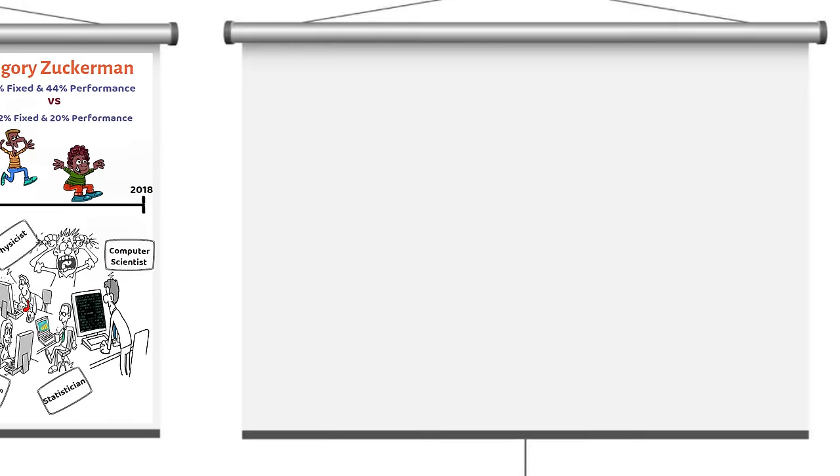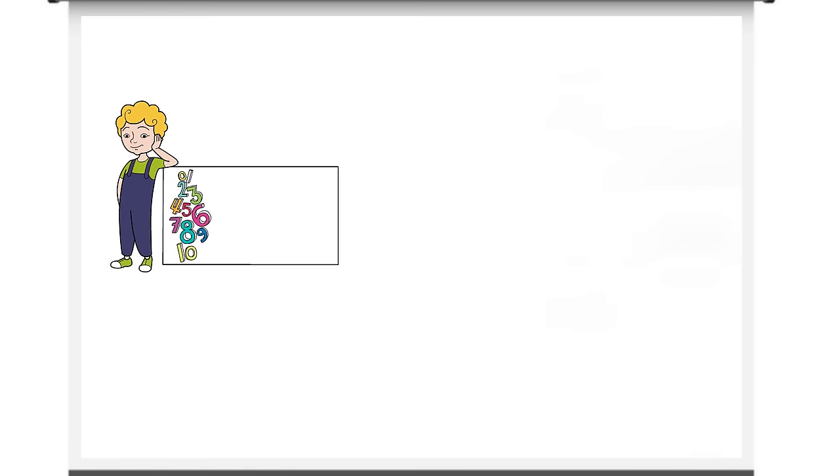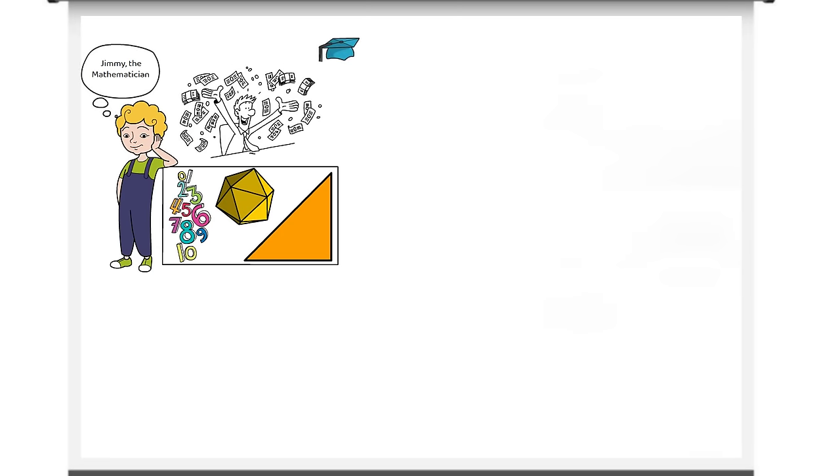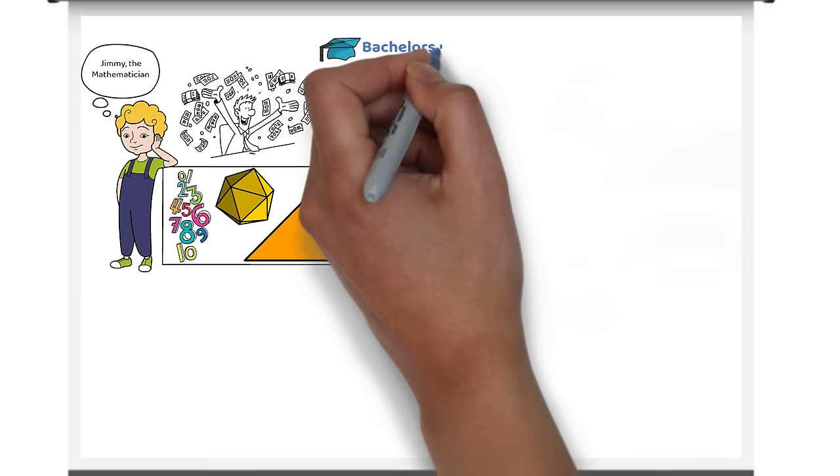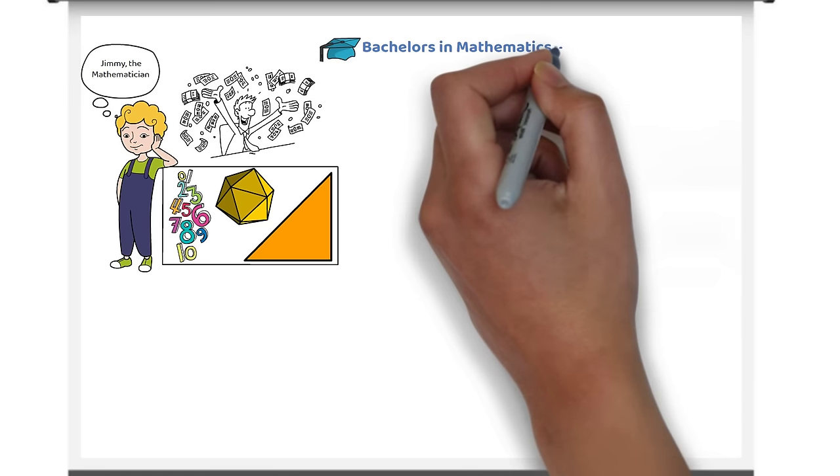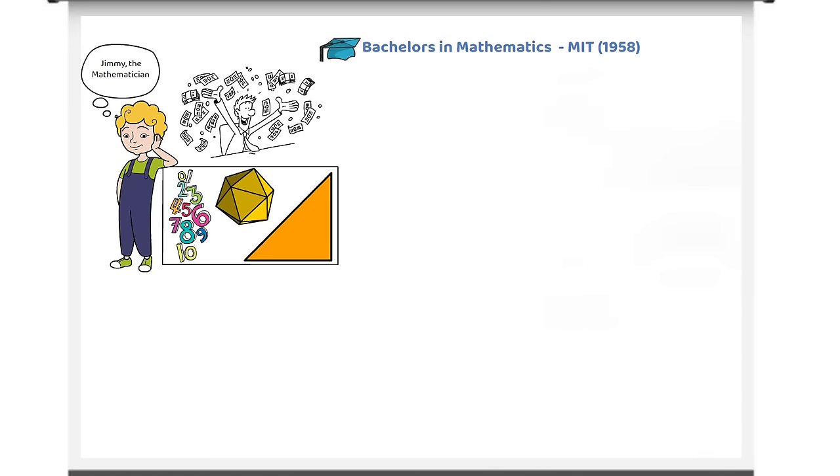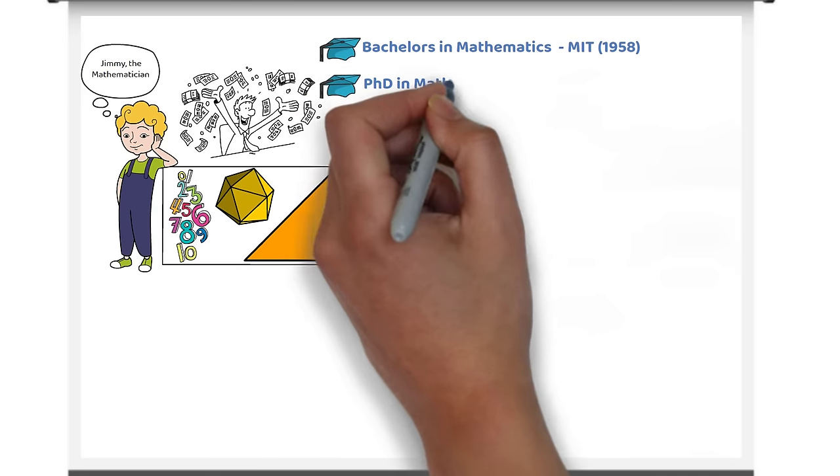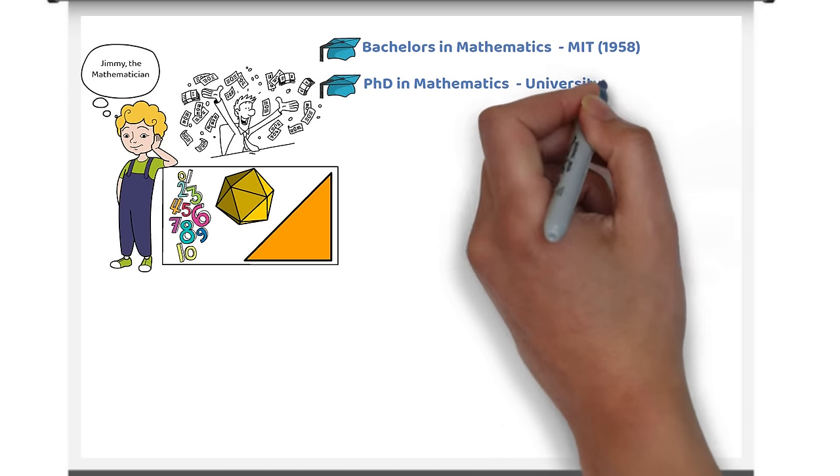Simons was a maths buff since he was three years old and was always preoccupied with numbers, shapes and slopes. He went on to pursue his love for maths, receiving a bachelor's degree in mathematics from the Massachusetts Institute of Technology in 1958 and a PhD in mathematics from the University of California, Berkeley in 1961.